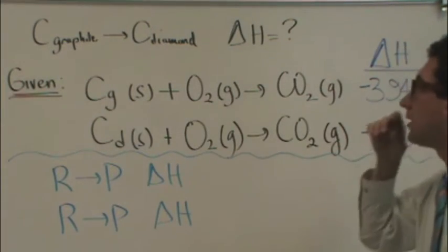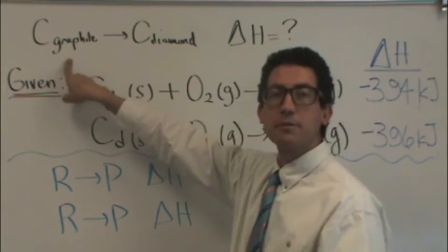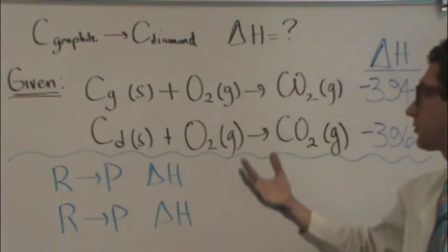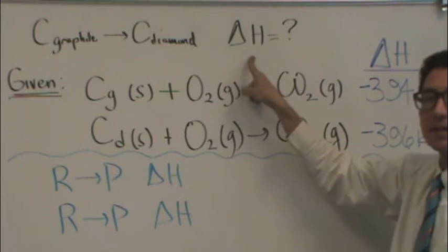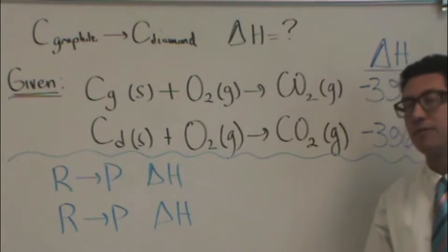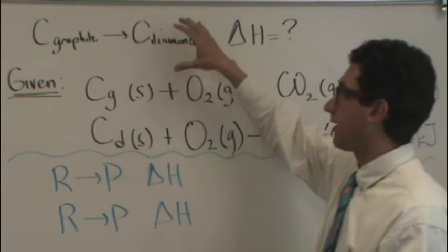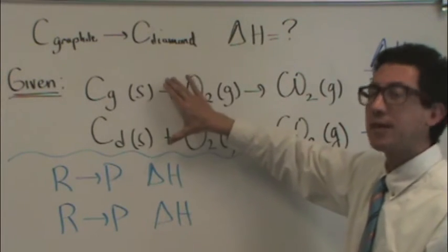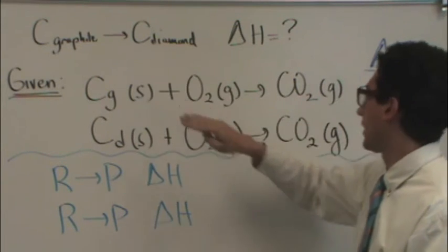Here's how it works. Let's say you have an example of carbon graphite turning into carbon diamond. Both graphite and diamond are made out of carbon. You want to find delta H, and you're given these two reactions. This is a classic setup of Hess's Law, where you have more than one reaction. These are called the simultaneous or consecutive reactions, and this is the overall reaction.